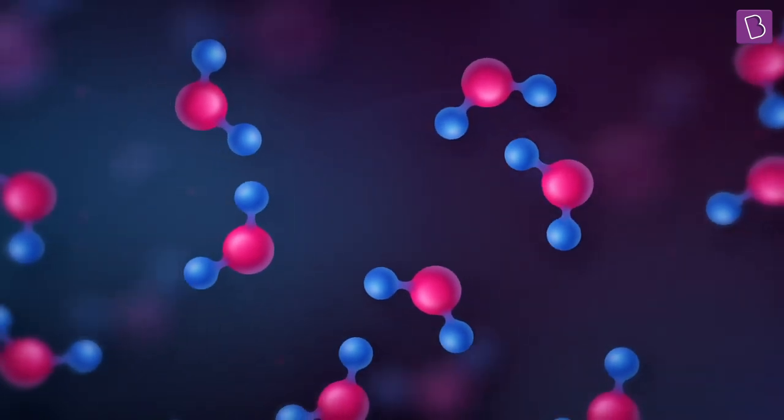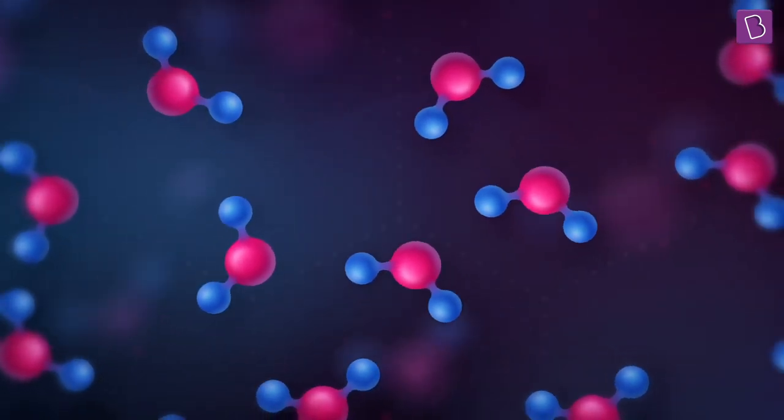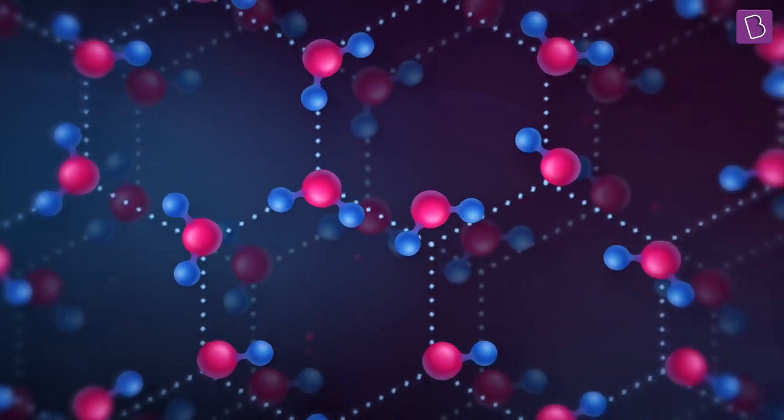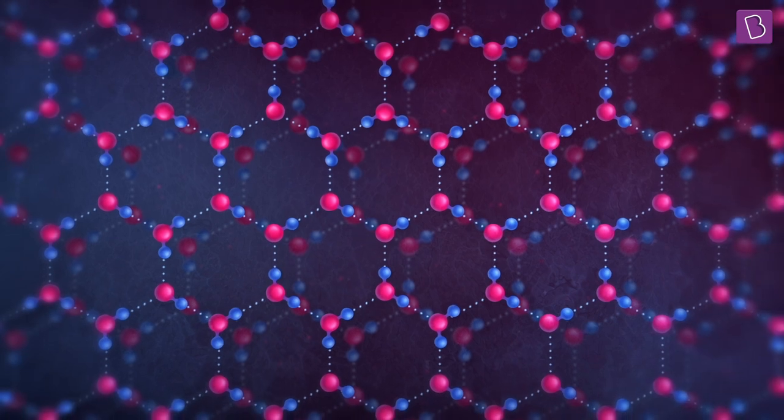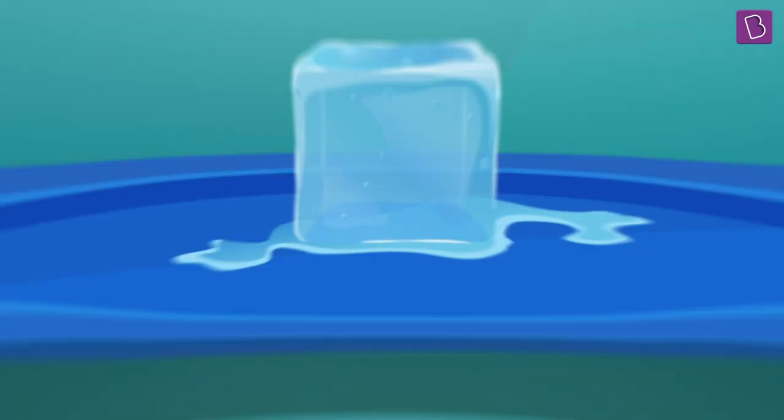But once a bunch of ice crystals are formed, they seed the surrounding water molecules and the structure spreads all over the water, like a domino effect. The water entirely freezes into ice.